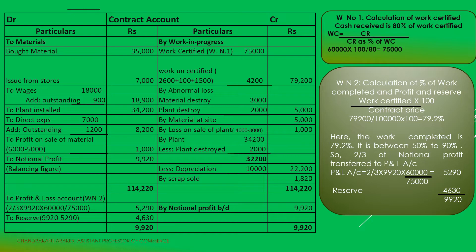Now, plant at site at the accounting year end: calculation from point 5 — plant installed Rs. 34,200, less plant destroyed Rs. 2,000, gives Rs. 32,200, less depreciation Rs. 10,000. Total plant at site is Rs. 22,200.